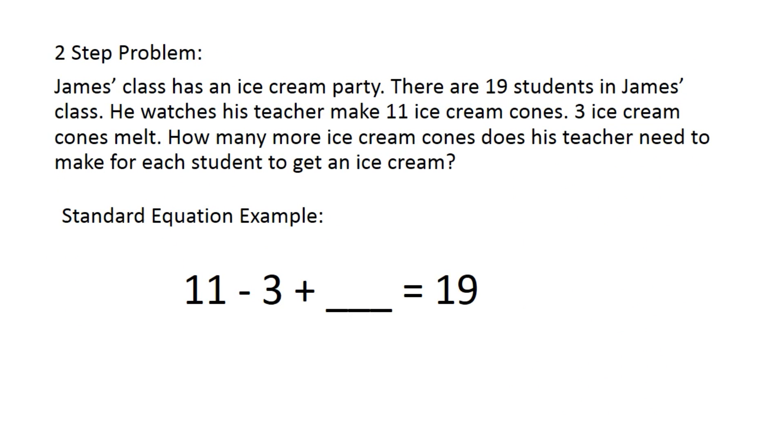Here's an example of a two-step problem similar to the one-step problem we just did. James' class has an ice cream party. There are 19 students in James' class. He watches his teacher make 11 ice cream cones. Three ice cream cones melt. How many more ice cream cones does his teacher need to make for each student to get an ice cream?